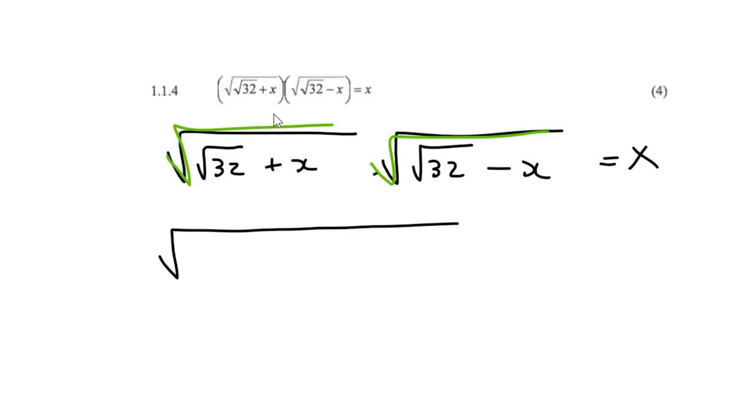So I'm going to make it one big square root, and everything else on the inside is going to stay as it is. Don't worry too much about the square roots that we can see there, and then square root of 32 minus x equals 2x. What I would then do is multiply these two brackets out on the inside.